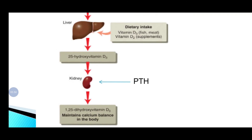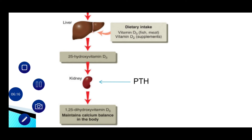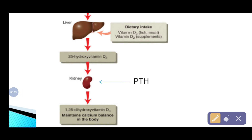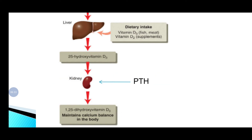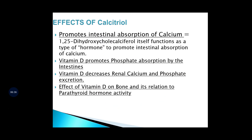PTH governs the conversion of 25-hydroxy D3 into 1,25-dihydroxy D3. If PTH level is low or absent, there is no vitamin D activation. Whenever calcium concentration increases too much in the body, PTH is suppressed. When PTH is suppressed, there is no conversion of 25-D3 to 1,25-D3, so no further calcium absorption occurs — this serves as a negative feedback mechanism.